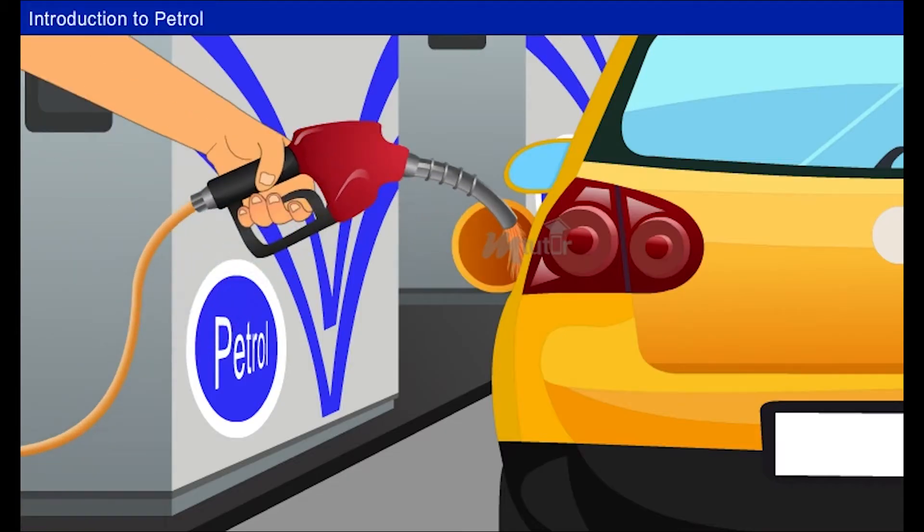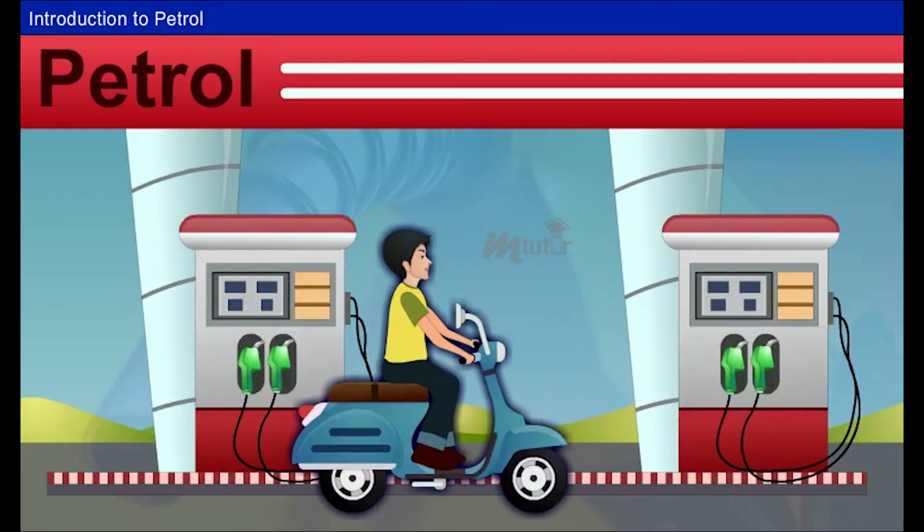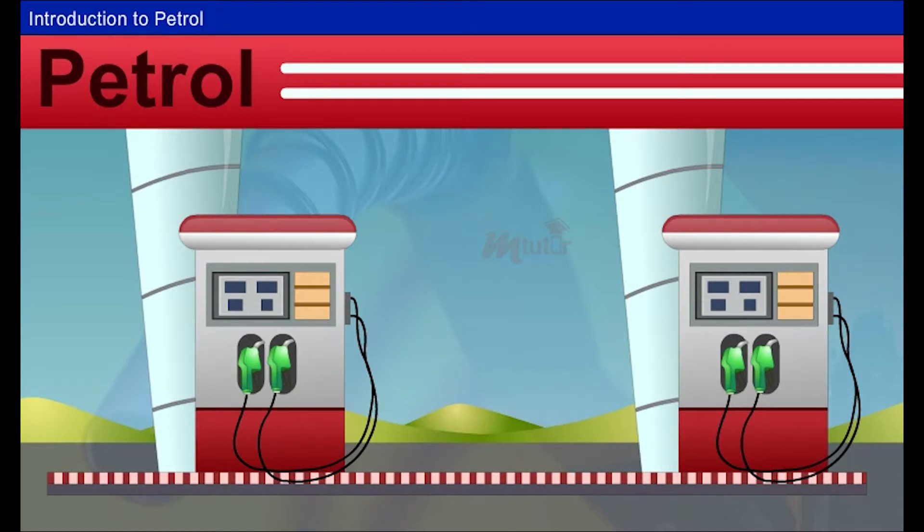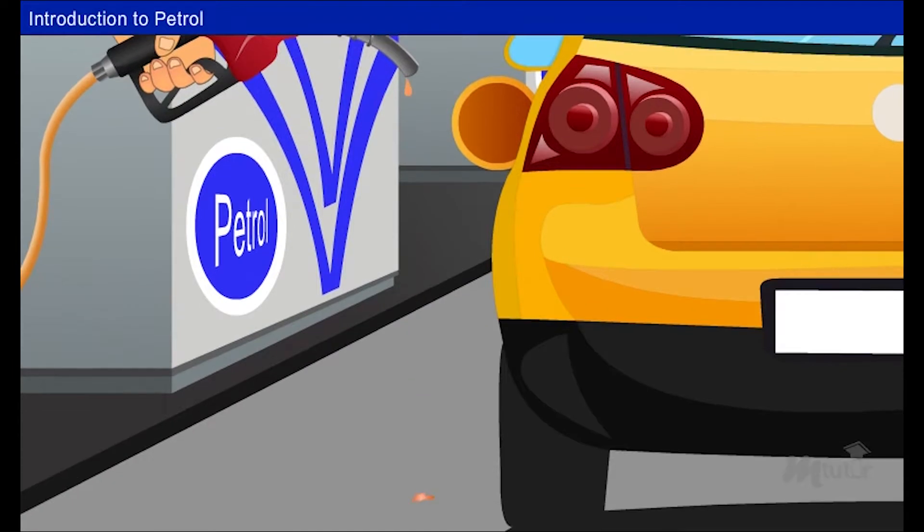Petrol is one of the most useful products in the world today. Cars, scooters, airplanes and various other automobiles all consume it as their fuel. It is also a source of light and other forms of energy.